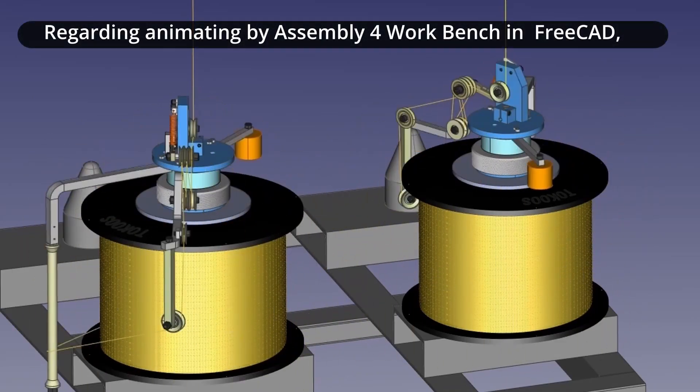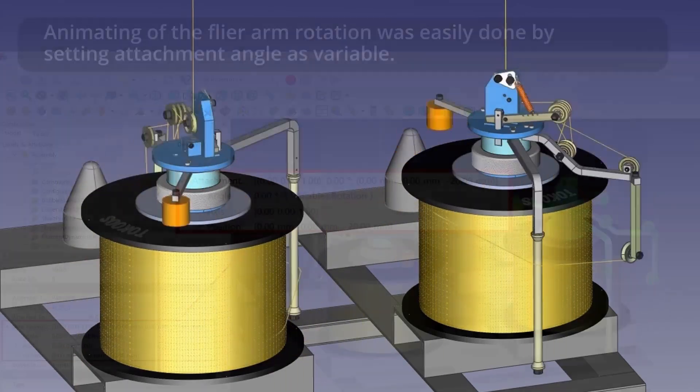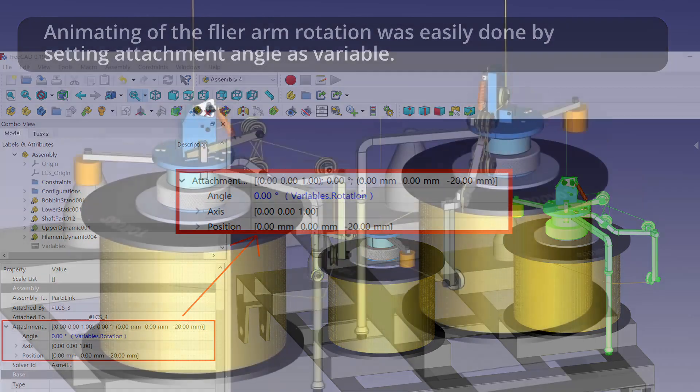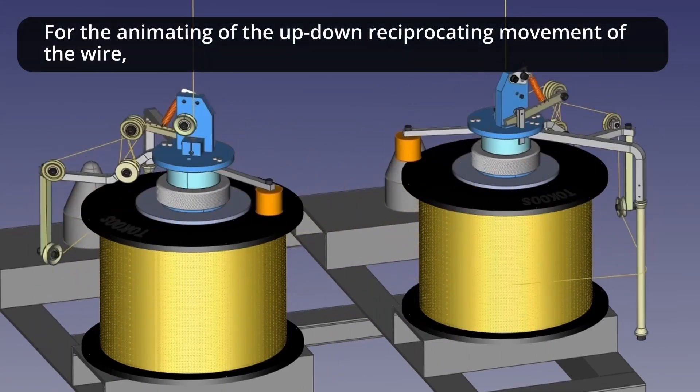Regarding animating by assembly for workbench in FreeCAD, animating of the flyer arm rotation was easily done by setting attachment angle as variable.